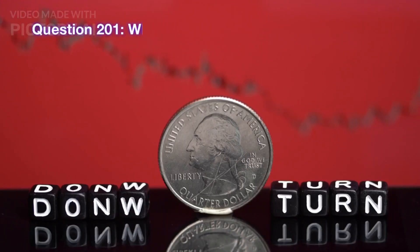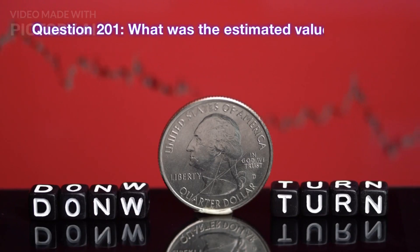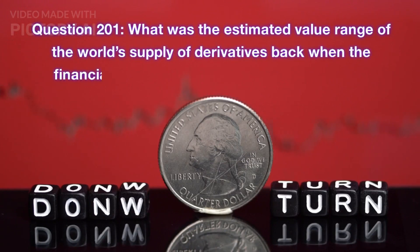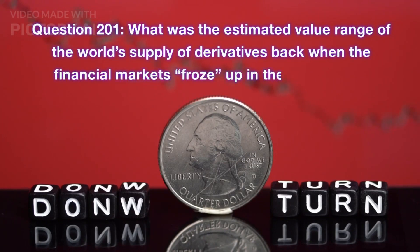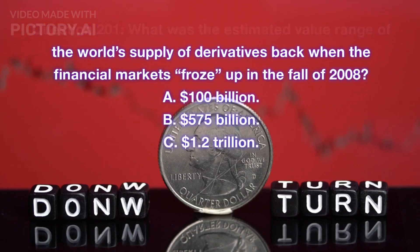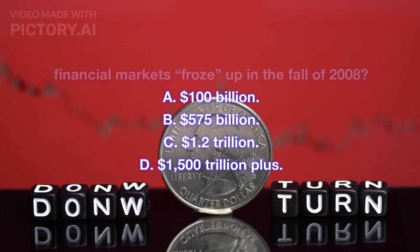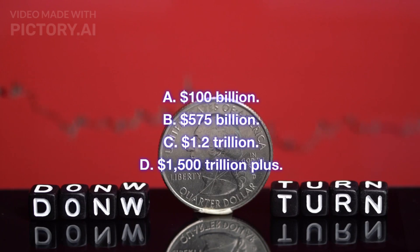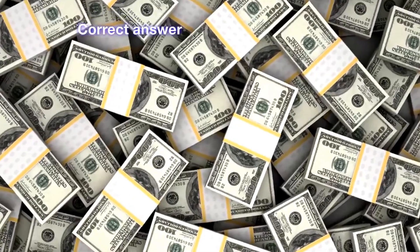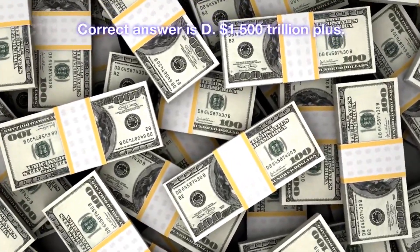Question 201. What was the estimated value range of the world's supply of derivatives back when the financial markets froze up in the fall of 2008? A. $100 billion. B. $575 billion. C. $1.2 trillion. D. $1,500 trillion plus. Correct answer is D. $1,500 trillion plus.